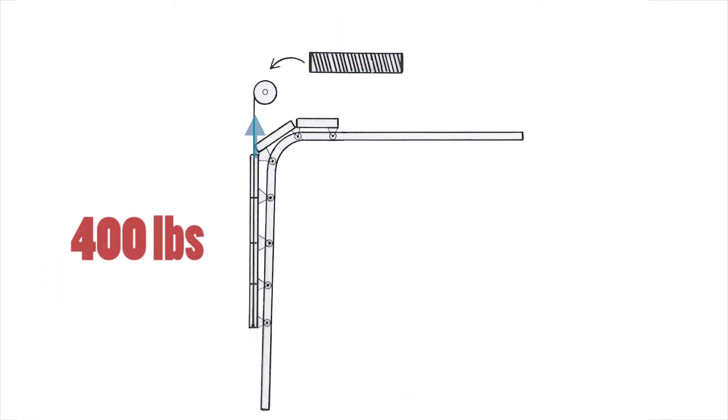As the door rises into the horizontal tracks, the spring starts to unwind so that by the time two sections are in the horizontal tracks, the spring only has four turns of tension and the cables are pulling only 400 pounds of force. The door is as easy to lift at this point as it was when the door was closed.